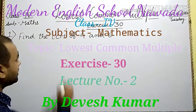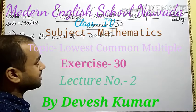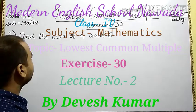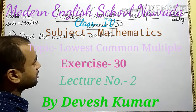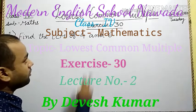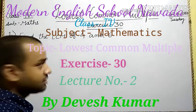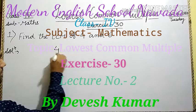Find the LCM of 4 and 6. First of all, we find the prime factors of 4 and 6 by division method.